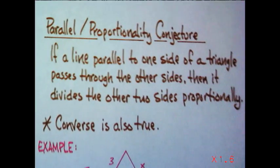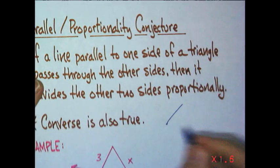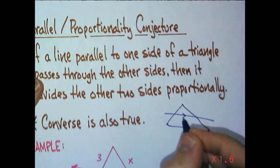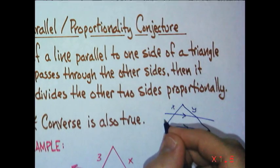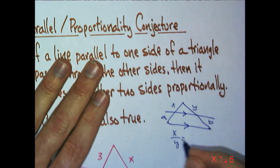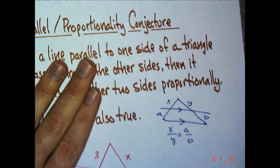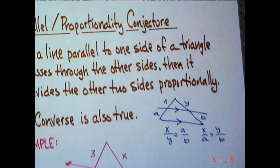So in words, what that means is if a line parallel to one side of a triangle passes through the other side, then it divides the other two sides proportionally. A picture of it. If this is parallel to this, and this is my X and Y, and this is A and B, we could say X compared to Y is A compared to B. Or you could say, likewise, X compared to A would be Y compared to B. Whatever works for you.